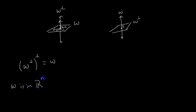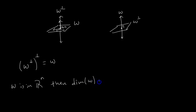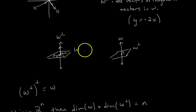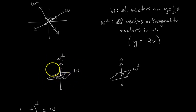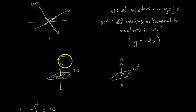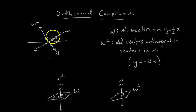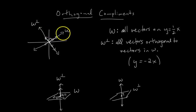The second theorem: if W is in ℝⁿ, then the dimension of W plus the dimension of W perp equals n. This makes sense from our examples. In three dimensions, W was a plane (dimension 2) and W perp was a line (dimension 1), and 2 + 1 = 3. In two dimensions, W and W perp are both lines, so 1 + 1 = 2.